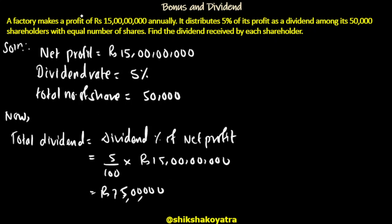It's very simple. A factory profit is 15 crore. They give 5% of its profit as dividend to shareholders. There are 50,000 shares total. Total dividend: 5% dividend percent, so 5/100 multiplied by 15 crore.